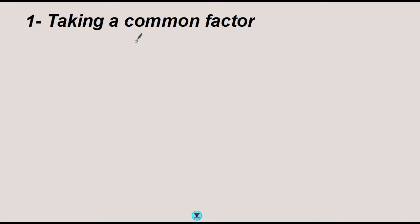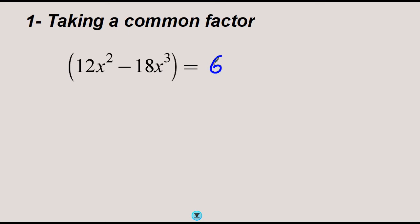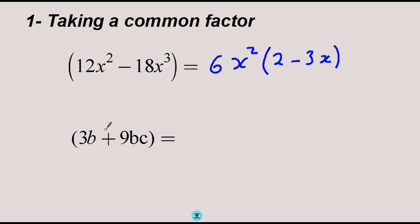The easiest method of factorization is taking a common factor. If you want to factorize an expression like 12x² minus 18x³, you look at the constants 12 and 18 and the variables x² and x³, and ask what is the highest common factor. The HCF of 12 and 18 is 6, and the HCF of x² and x³ is x². So the common factor is 6x², leaving 2 minus 3x inside the bracket.